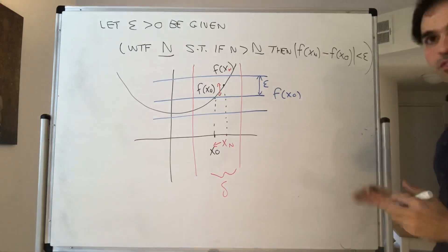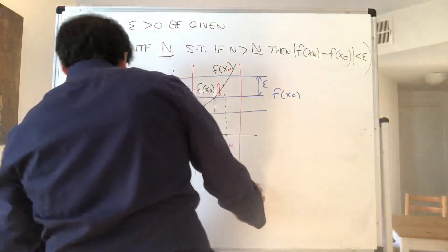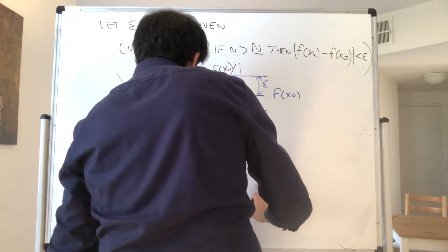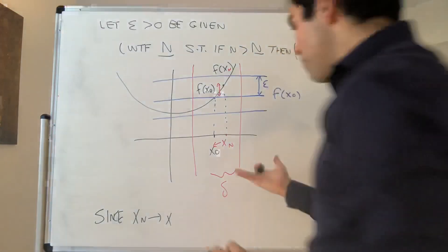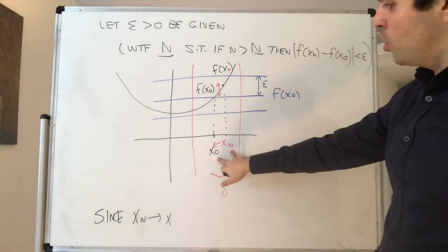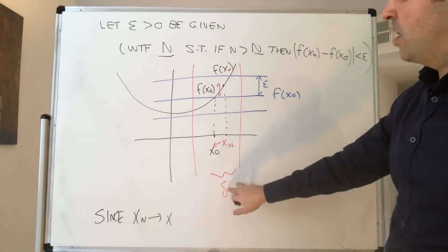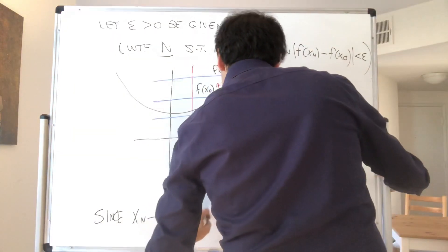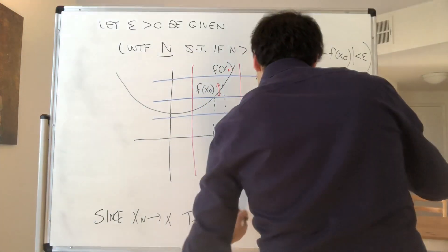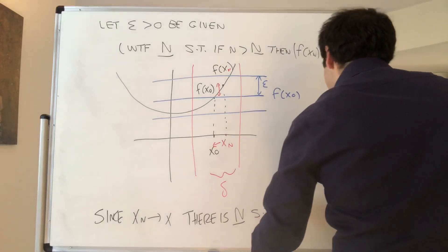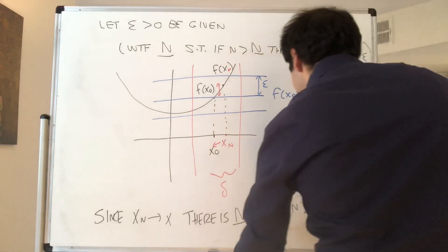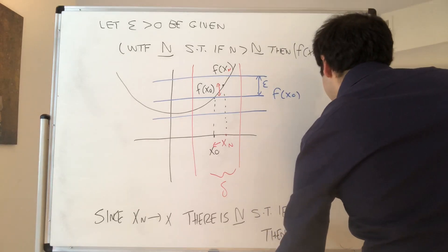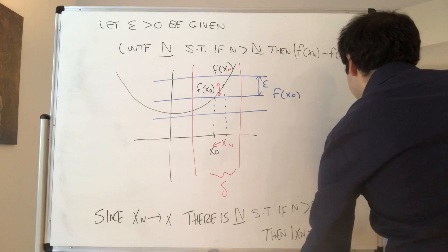Here's the idea: suppose you have a sequence xn converging to x naught. Eventually this sequence is in the good region of radius delta, because xn is close to x naught. Therefore, by epsilon-delta, f of xn is also in the good region with epsilon, meaning the distance between f of xn and f of x naught is less than epsilon. So since xn converges to x naught, there is a threshold N such that if n is bigger than capital N, then xn minus x naught is less than delta — we just use delta in place of epsilon in the sequence limit definition.